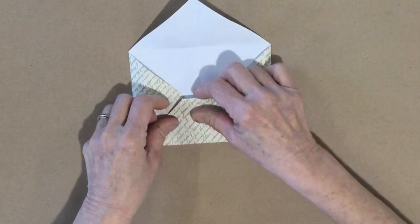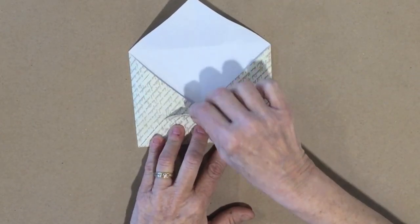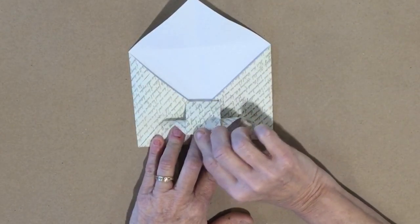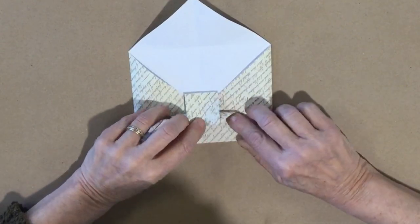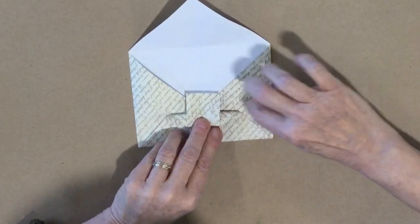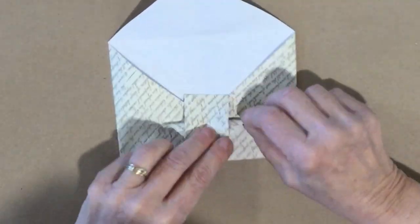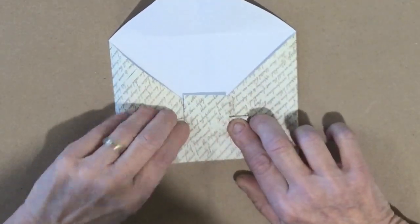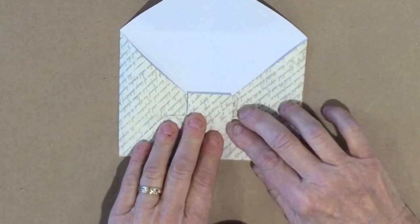I am going to fold this top piece down. And then pushing the square up, I am going to fold this back. Now where I am going to fold this back at is you are going to see these two crease lines across here. Just below that is where you want to fold it. So we have got that.